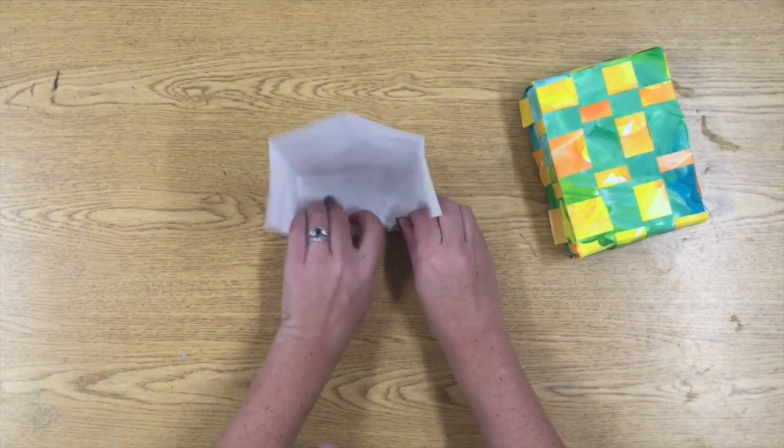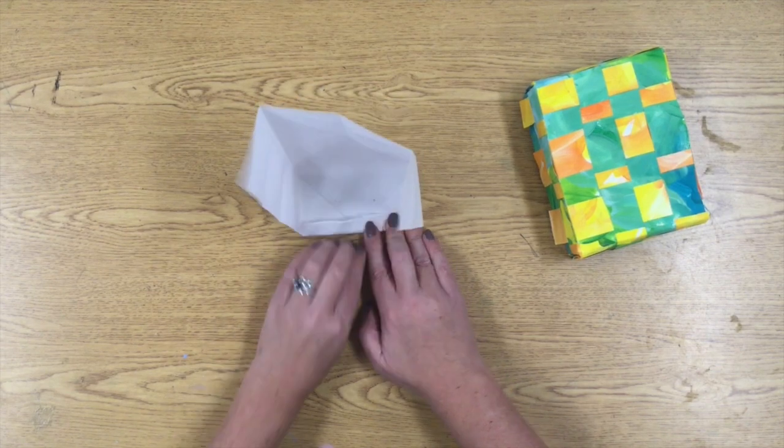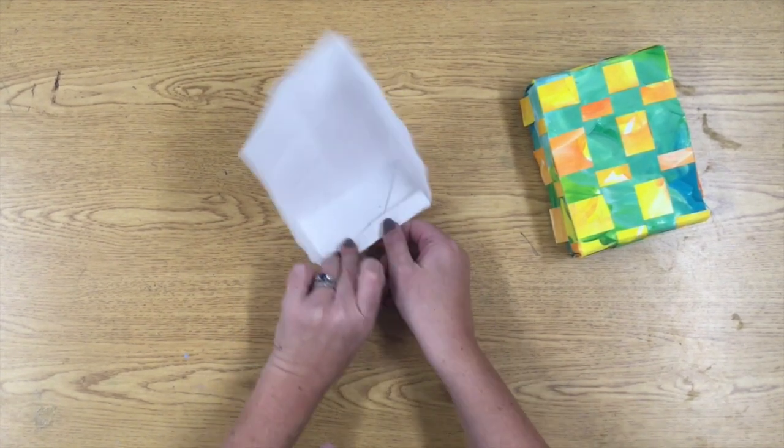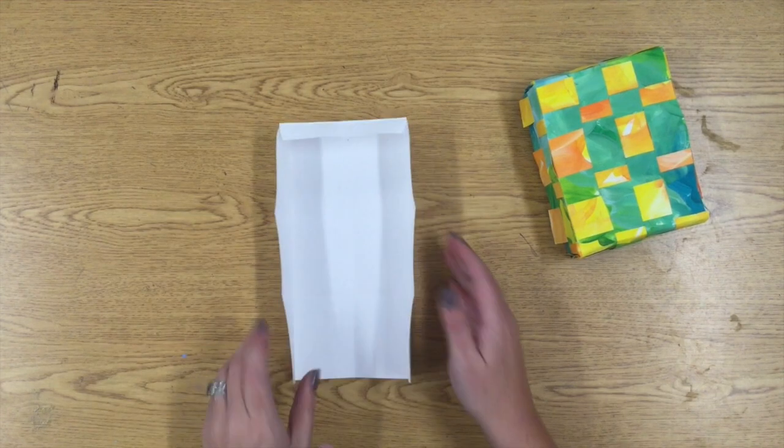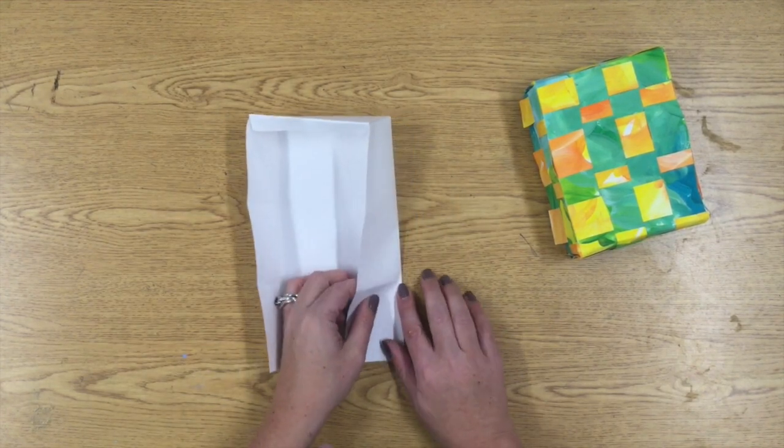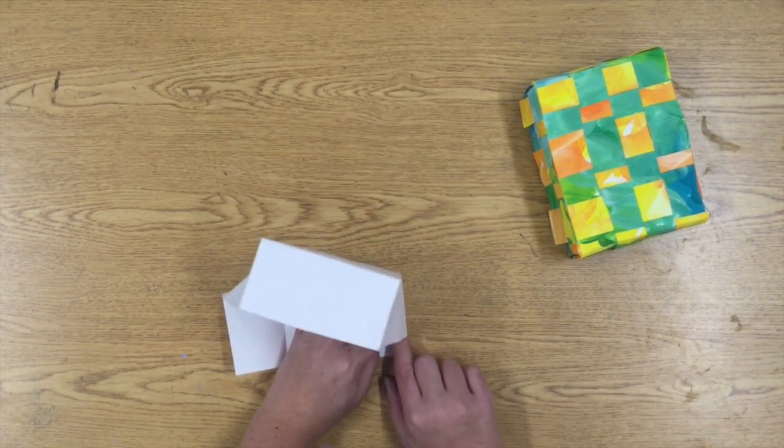There's a little extra flap of paper and I'm going to fold that flap around the edge and that's going to hold my side together. You can staple it or tape it later if you want to but that's all you really need.